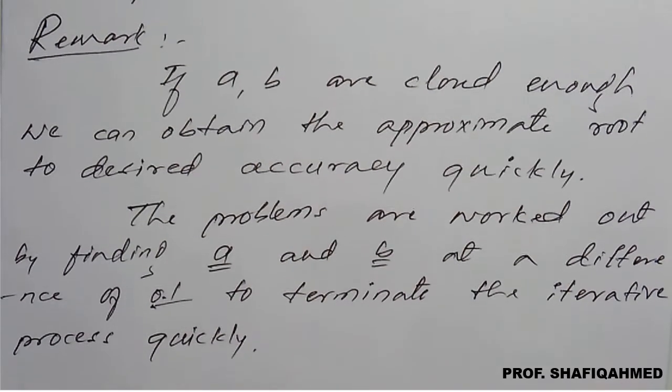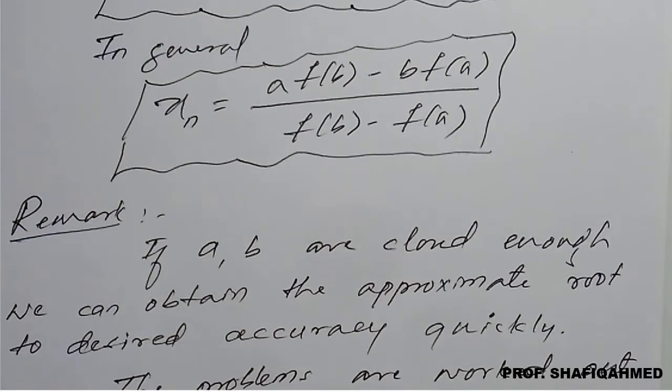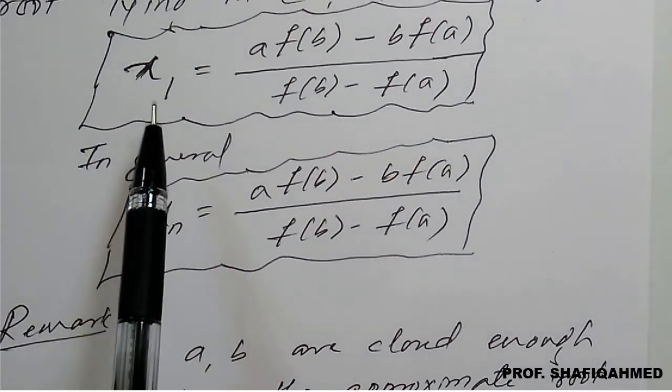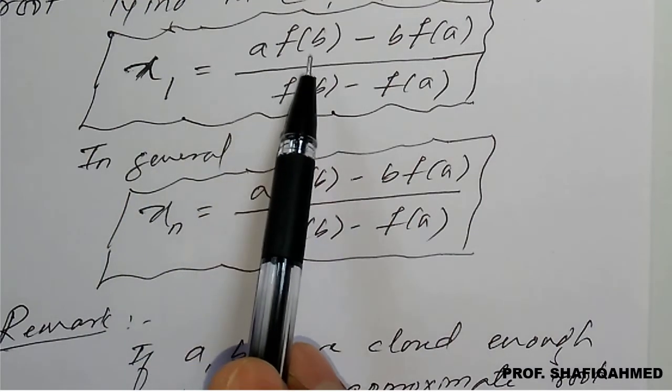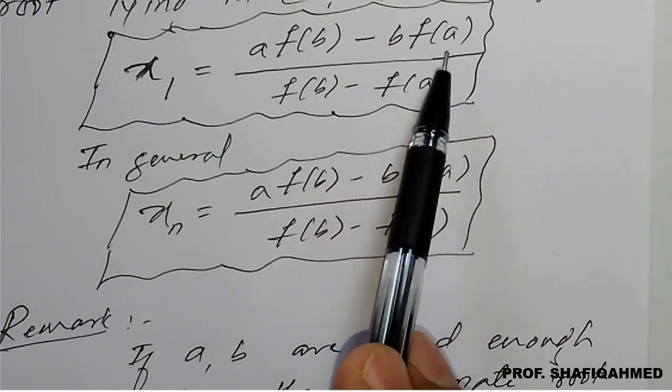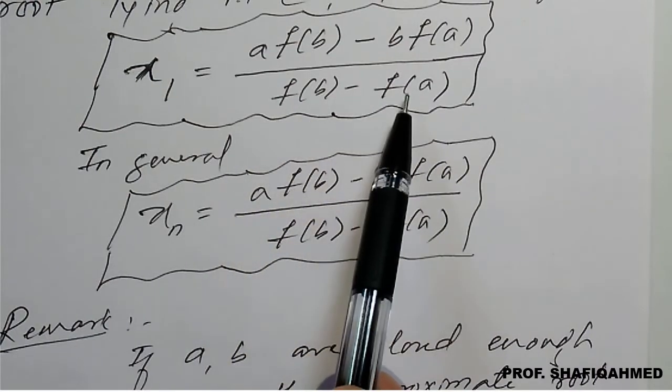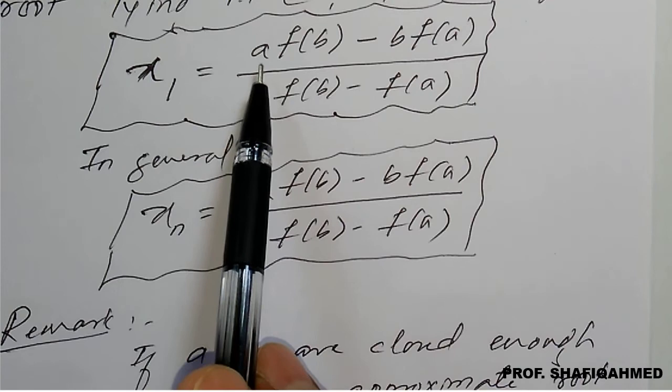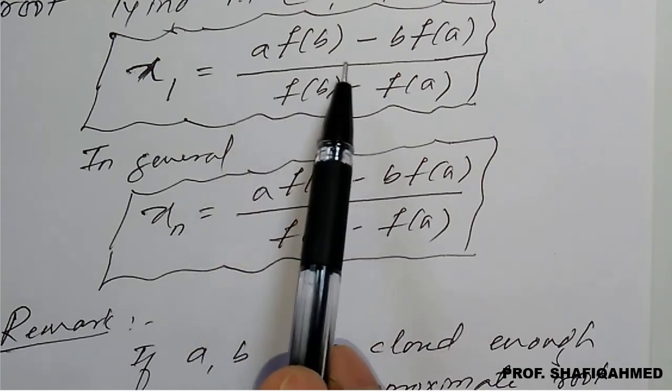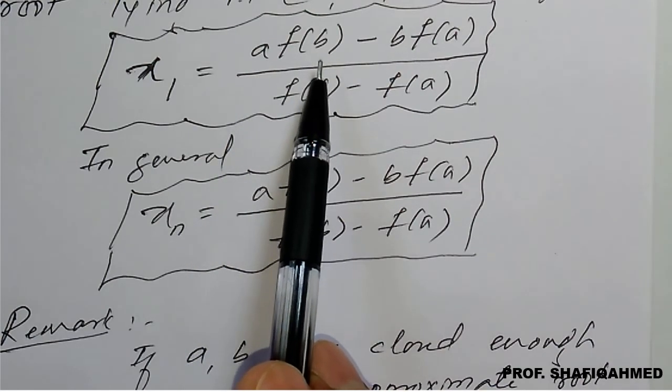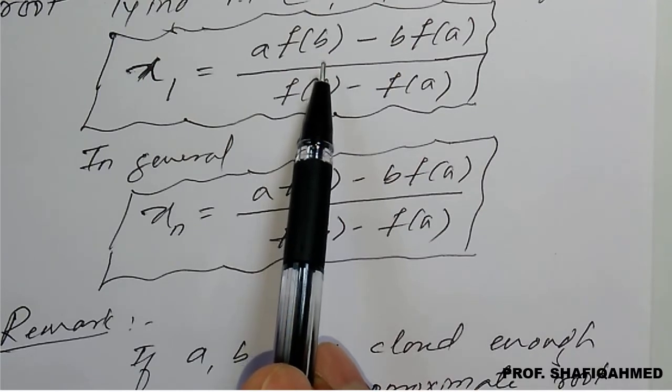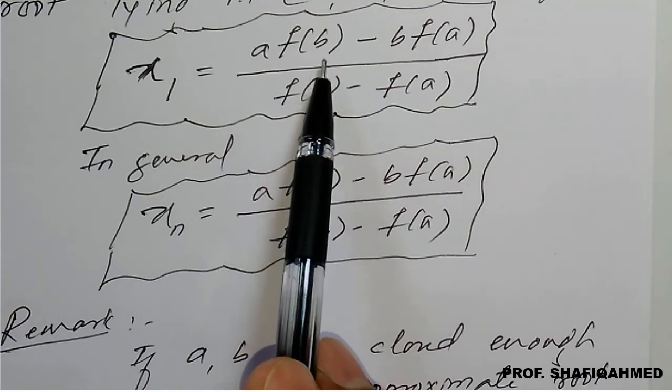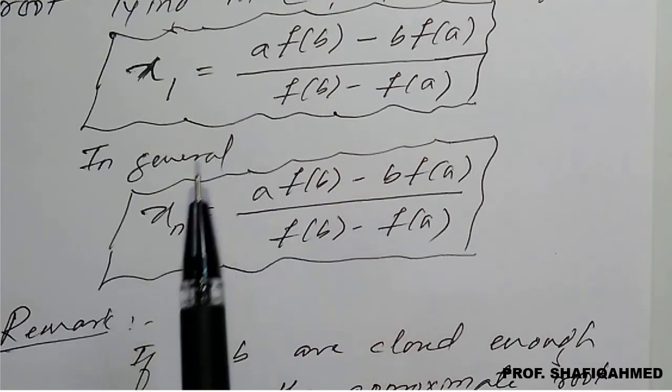So we will go back the formula for regula falsi here so x1 is nothing but a into f of b minus b times f of a divided by f of b minus f of a and you know that a is nothing but the one of the root what we have chosen for positive or negative and b is also a one of the root which is nothing but what here may be positive. If a is positive then b will be negative and b is positive then a will be negative of that values here.